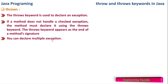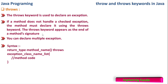You can declare multiple exceptions in a method — we can declare multiple exceptions which could be thrown. Here is the syntax: return type, method name, throws exception class name list. There can be multiple exception names which could be thrown from this method.